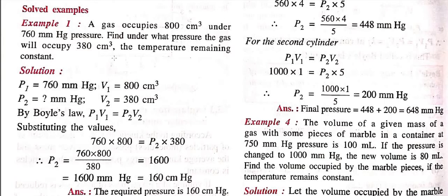So, from Boyle's law, and why you are using Boyle's law, since the condition is given, the temperature remaining constant. So, by Boyle's law, we have got p1v1 equals to p2v2. So, we will substitute the values: 760 into 800 equals to p2 into 380.